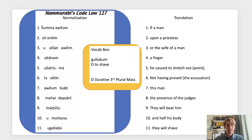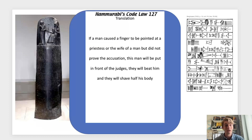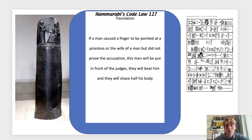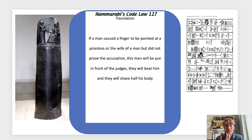Now that we have our word-by-word translation, let's put it all together for a more fluid rendering. Hammurabi's Code, Law 127: 'If a man caused a finger to be pointed at a priestess or the wife of a man, but did not prove the accusation, this man will be put in front of the judges and they will beat him and they will shave half of his body.' Here we can see the Sheen system in full effect. And it looks like in Mesopotamia, if you caused someone to be accused of something, you could really be in trouble — as shown by this punishment of shaving half the body, which in the ancient world was a sign of dishonor. If you saw someone walking around with half their head and beard shaved, you would know they were not to be trusted and had done something wrong.